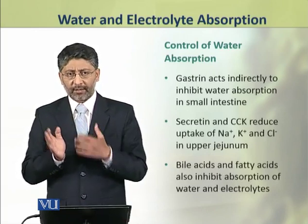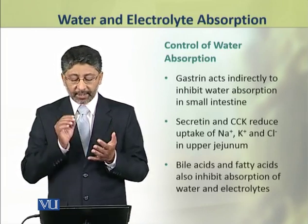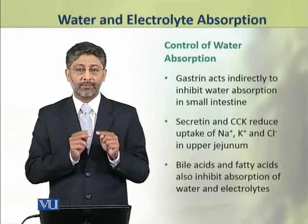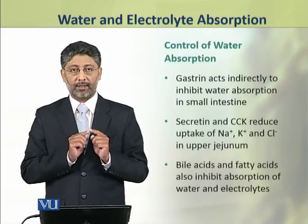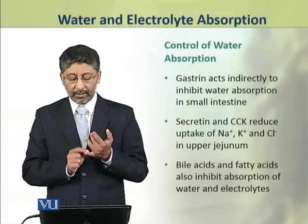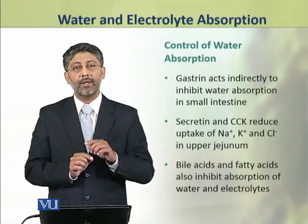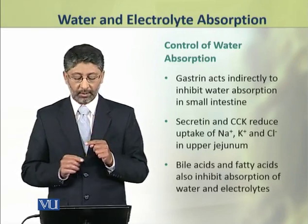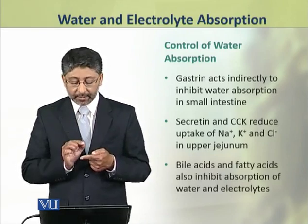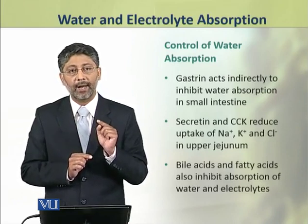The various factors which control the absorption of water include the gastrin hormone, which acts indirectly to inhibit water absorption in the small intestine. Secretin and cholecystokinin reduce the uptake of electrolytes — sodium, potassium, and chloride ions — in the upper GI tract. Moreover, bile acids and fatty acids also inhibit absorption of water and electrolytes.